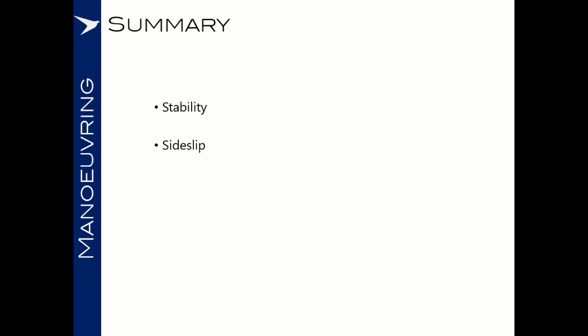To summarise this section, we've looked at the stability of an aircraft and revised some concepts. We've discussed sideslip and the dangers associated. We've examined dihedral effects and how they help correct sideslip, and we've discussed the mechanics of maneuvering flight.